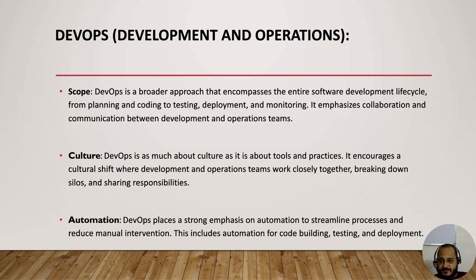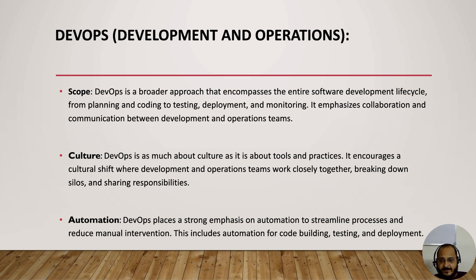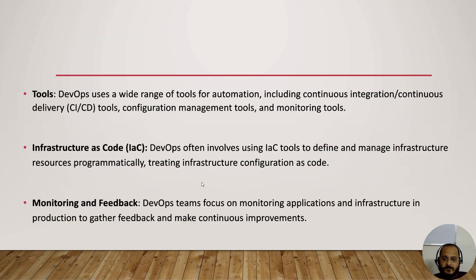DevOps places a strong emphasis on automation to streamline processes and reduce manual intervention, including automation for code building, testing, and deployment. As part of automation under DevOps, we use multiple kinds of tools — for configuration management, infrastructure as code, and CI/CD as separate tools — combining many tools to automate one application pipeline.